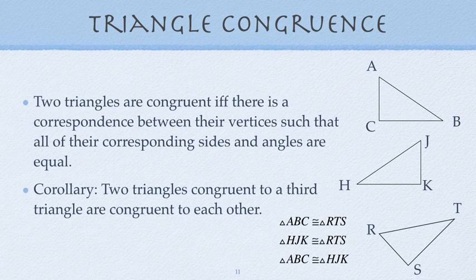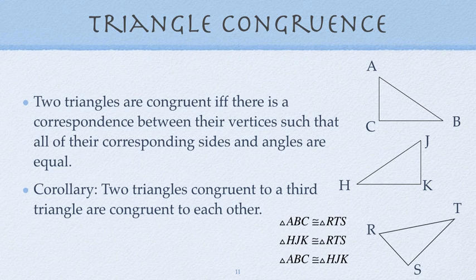Two triangles are congruent if and only if there is a correspondence between their vertices such that all of their corresponding sides and angles are equal. The corollary to that is: two triangles that are congruent to a third triangle are also congruent to each other.